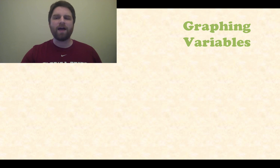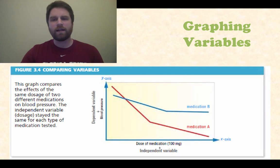When you graph variables, last thing we're looking at here, you can see this graph compares the effects of the same dosage of two different medications on blood pressure. We're looking at the same dose, two different medicines and what effect they have on blood pressure. The independent variable, which is the dosage on the x-axis down there, stayed the same. And the blood pressure was the dependent variable, that's on the y-axis. You can kind of see how this would look.